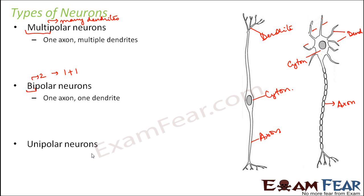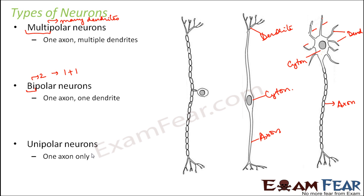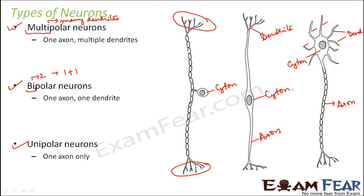The third type is the unipolar neuron. In a unipolar neuron you obviously have one axon, as that is fixed. But in this case, initially you do not have any dendrites. The cell body or cyton has just one long axon; on one end are the axon endings, while on the other end it later gives rise to the dendrite. So there is no dendrite coming directly from the cell body — that is why it is known as a unipolar neuron. If there are no dendrites at all, it is unipolar; if there is one dendrite it is bipolar; if there are multiple dendrites it is multipolar.